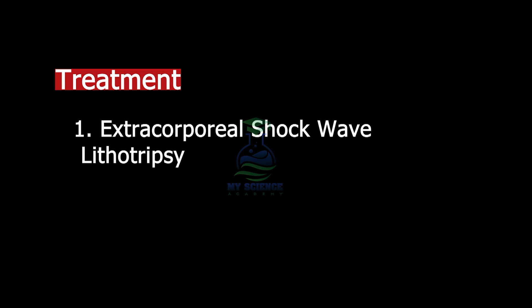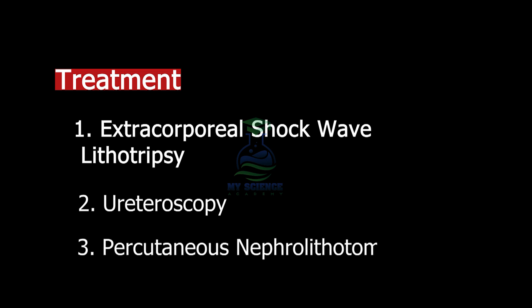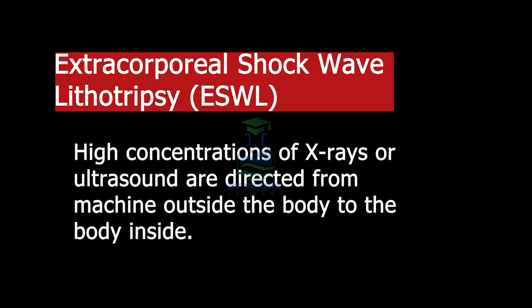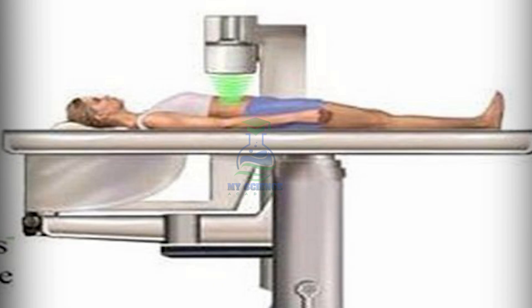Number one: extracorporeal shock wave lithotripsy. Number two: ureteroscopy. Number three: percutaneous nephrolithotomy. Number four: surgery. Extracorporeal shock wave lithotripsy, also known as ESWL, is used to break up stones in the kidneys, ureter, or gallbladder. In this technique, high-energy X-rays or ultrasound are directed from a machine outside the body to the stone inside. Here you can see the X-rays directed from outside the body to the stone inside. These shock waves break up the stone into smaller pieces or sand-like structures, which are passed out of the body through the urine.